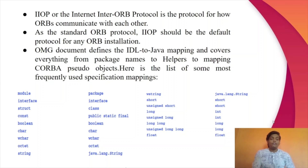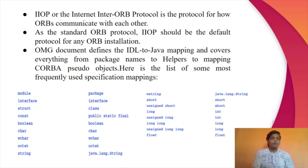The OMG document defines the IDL-to-Java mapping and covers everything from package names to helpers to mapping CORBA pseudo-objects. Here is a list of some of the most frequently used specification mappings — take a look at them and then we will move ahead.